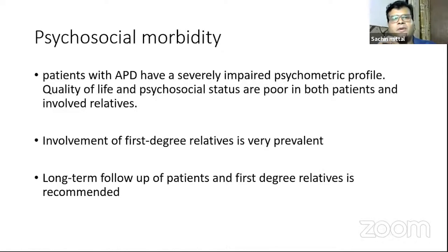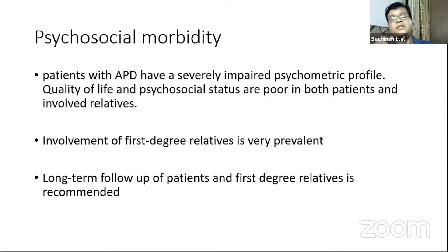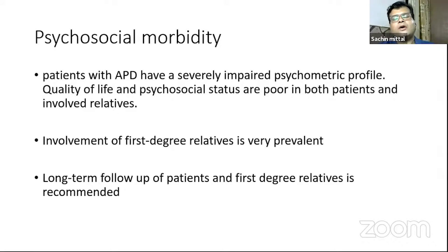Psychosocial morbidity has been pretty significant because many patients have seen family members with multiple disorders. When screening starts, patients become aware that something they may or may not develop could affect them, leading to significant impairment in quality of life and psychosocial status. Involvement of first-degree relatives in classical autoimmune polyglandular diseases is pretty prevalent.